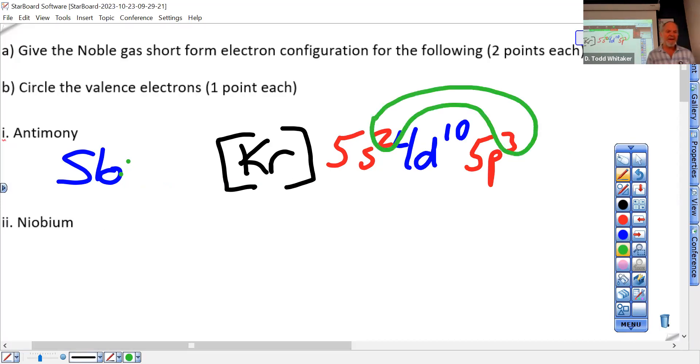Those are the valence electrons, right? Everything with a five in front. Four is buried underneath. Sure, separate circles works. Everybody's got their own circling. Mine started way back when I was a kid, I love to put big circles around everything.